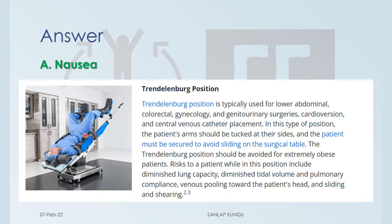The answer is option A, nausea. As seen in this figure, the Trendelenburg position is used for lower abdominal, colorectal, gynecology, and genitourinary surgeries. The patient's arms should be tucked at their sides and secured to avoid sliding on the surgical table. It is avoided for extremely obese patients, and risks include diminished lung capacity, diminished tidal volume, and pulmonary compliance. It cannot be used in cases of edema or secretion retention, leaving option A, nausea, as the answer.